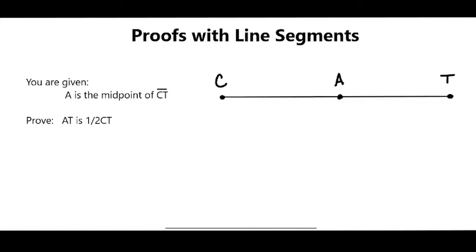So here we are given that A is the midpoint of line segment CT. They want us to prove that AT is one half of CT. Well, let's write out a proof to prove that AT is one half the length of line segment CT.